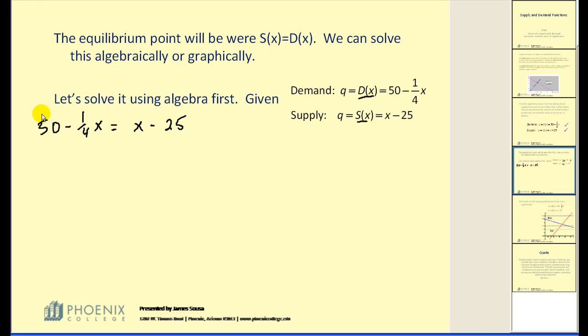Now the first thing I notice here is we have a fraction involved. I'm going to clear the fraction by multiplying both sides of the equation by four. That would give us 200 minus X is equal to 4X minus 100.